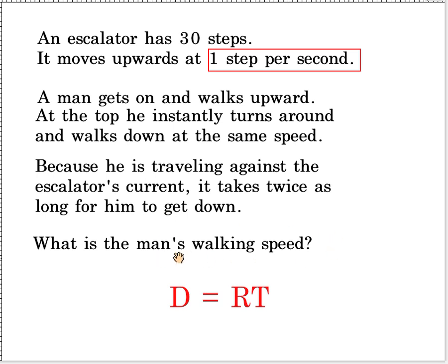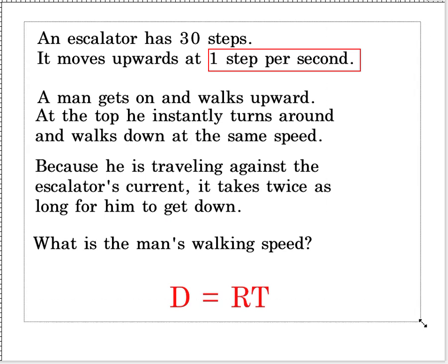What is the man's walking speed? So this is what they're after. What is the man's walking speed? And from this scanty information, we're supposed to figure that out. 30 steps. The distance of the escalator is 30 steps. It's moving at one step per second. And it takes him twice as long to get down. That's all the information we have. But it's enough to get it done, especially with the hack I'm going to introduce here.